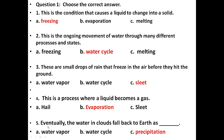Next: Eventually the water in clouds falls back to the earth as precipitation. Options are water vapor, water cycle, or precipitation. The answer is precipitation, C.